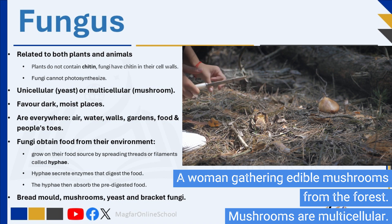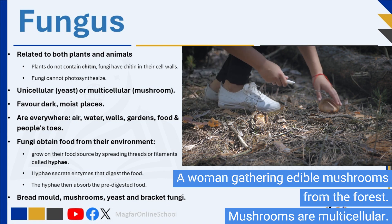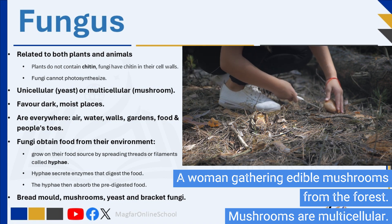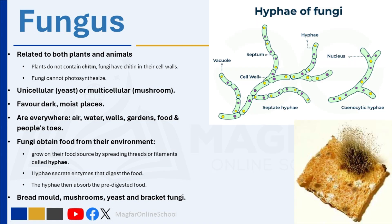Fungi obtain food through nutrients absorbed from their environment. Most fungi grow on their food source by forming a spreading network of branching threads called hyphae. These filaments secrete enzymes that digest the food, and the filaments then absorb the pre-digested food. Examples of fungi include bread mold, mushrooms, yeast, and bracket fungi. Of the approximately 1.5 million species of fungi, only 300 may cause infections in humans. Some common fungal infections include athlete's foot, ringworm, and fungal nail infections.